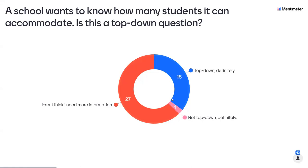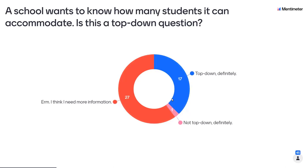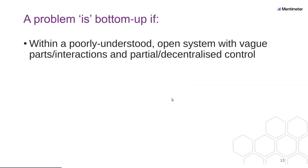I applaud your uncertainty and the popularity of people saying 'I think I need more information.' Moving on, a problem is bottom-up if it occurs within a poorly understood open system with vague parts or interactions and partial or decentralized control. Open systems as opposed to closed systems in top-down problems — open systems are things where people enter and exit the system all the time, sometimes in regular ways, sometimes in unpredictable ways.